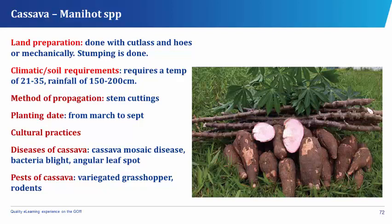Cassava, which has its botanical name as Manihot species, is a root and tuber crop. It has underground roots which can be consumed by man and livestock animals after processing. It has advantages over yam in that it can grow in relatively poor soil and in low rainfall areas. The root is also rich in carbohydrates. The climatic or soil requirement of cassava is a temperature of about 21 to 35 degrees and a rainfall of about 150 to 200 centimeters. A well-drained, rich, friable loamy soil is required, though it can also grow in poor soil.